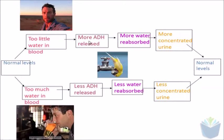If there's too much water, then less ADH is released, which means that less water gets reabsorbed by the kidneys. Therefore, you're going to get a less concentrated urine. If you've got too little water in the blood, more ADH is released, more water gets reabsorbed, so you're going to have a more concentrated urine.